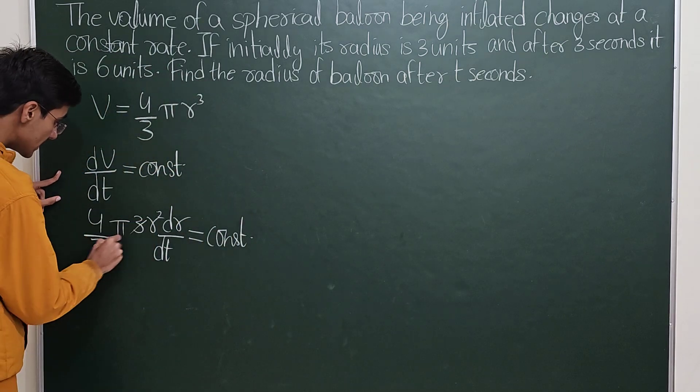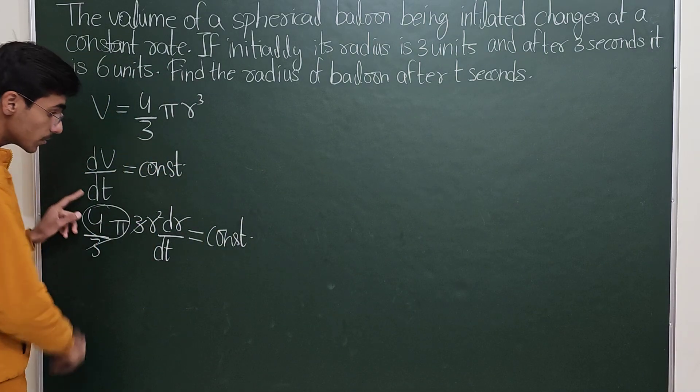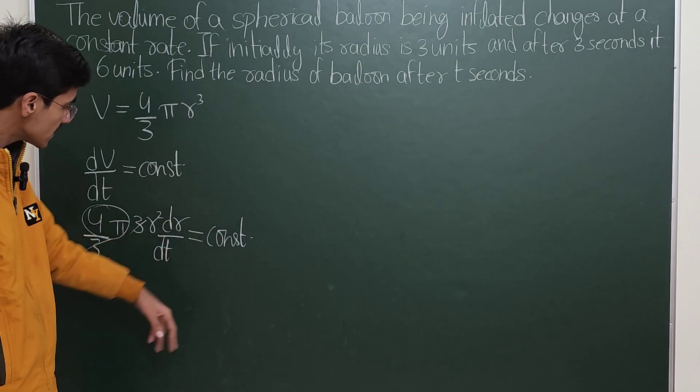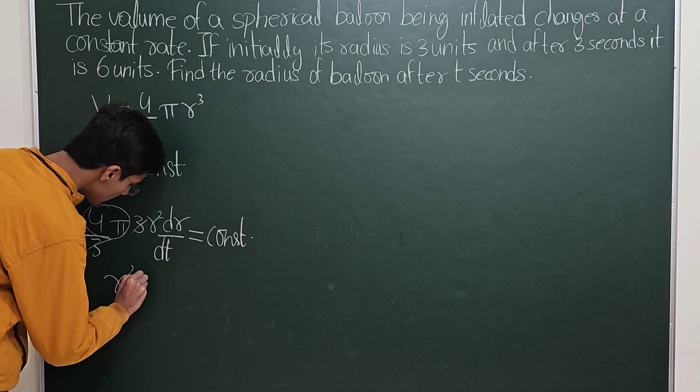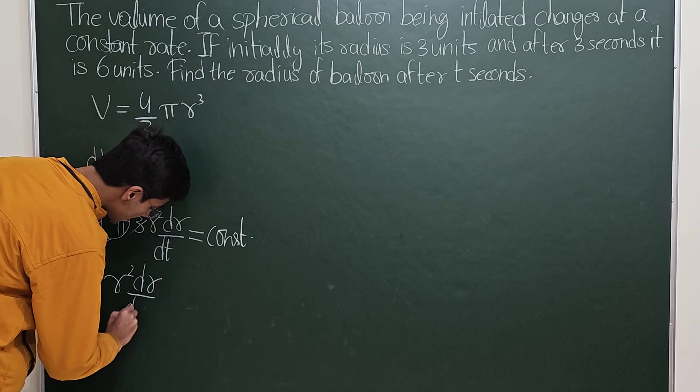This would give, since this term is a constant and this is a constant over a constant, another constant. We can say that r² dr/dt is a constant.